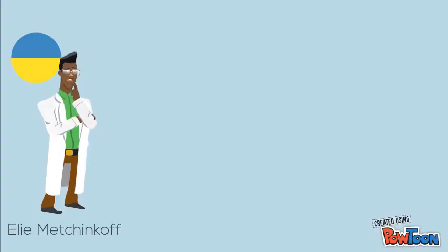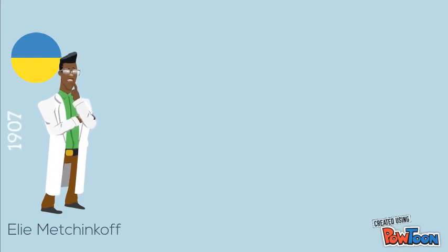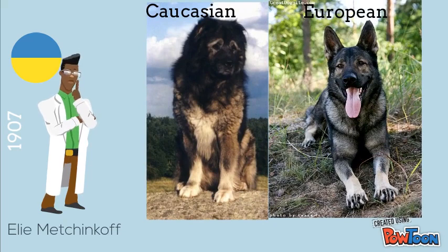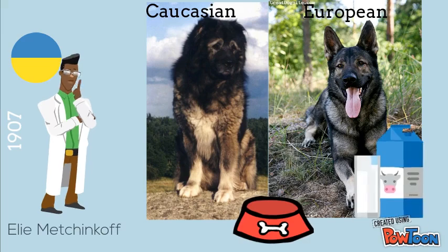This bacteria was discovered by biologist Élie Metchnikoff in 1907. He was studying the lifespan of Caucasian and European shepherds. He correlated higher lifespan to European shepherds because of their consumption of fermented milk.